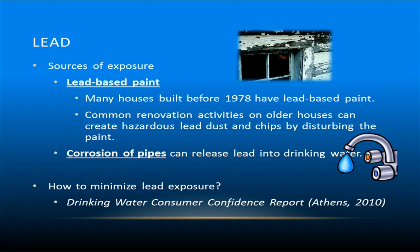The largest sources of lead exposure include lead-based paints and corrosion of pipes containing lead. Federal law requires that contractors performing renovation, repair, and painting projects that disturb more than six square feet of paint in homes, child care facilities, and schools built before 1978 must be certified and trained to follow specific work practices to prevent lead contamination. To minimize lead exposure from pipes, it is a good idea to contact your municipal water supplier to make sure lead concentrations in the distribution networks are at acceptable levels. Additionally, you may wish to test your tap water at home for lead or invest in additional water filtration treatment at the home level.